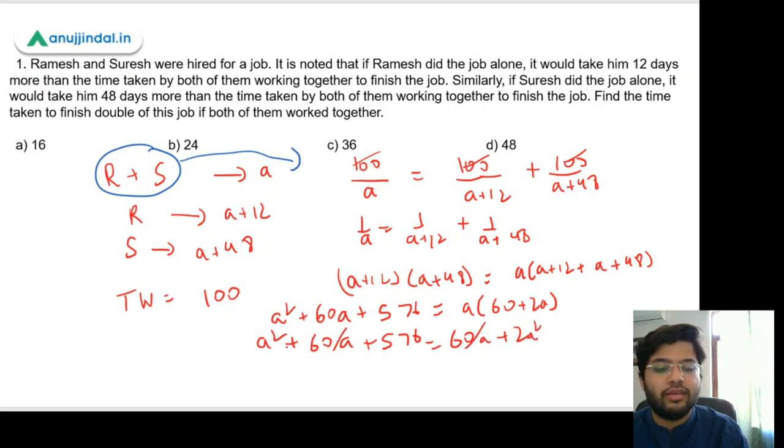60a gets cancelled on both sides. If we take a² over here, what we are left with is a² equals 576. Now we know 576 is the square of 24, so a comes out to be 24.